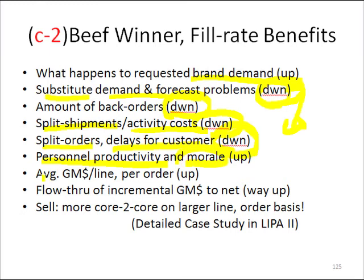Our average gross margin dollar per line item goes up because we don't have split shipments or split line items — half here and half from somewhere else, or half here and half back-ordered. Our picking productivity in the warehouse goes up, our gross margin dollar per invoice goes up, and our gross margin dollar per stop of the truck goes up.